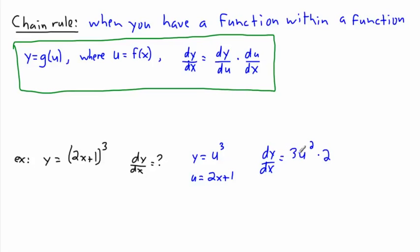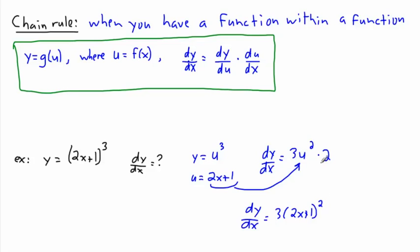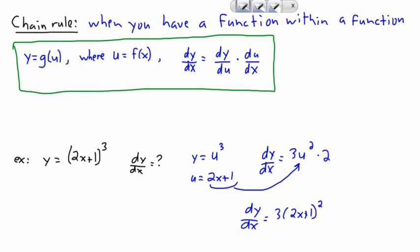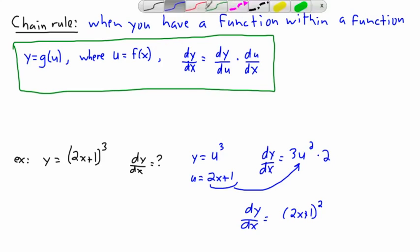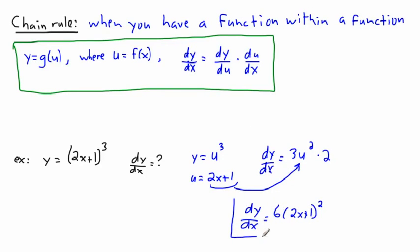The only issue is I can't leave u in the answer — I need to replace u with what it really is. So substituting back, dy/dx equals 3 times (2x+1) squared, all times 2. Simplifying, 3 times 2 is just 6, so the answer is 6(2x+1)² and we're done.